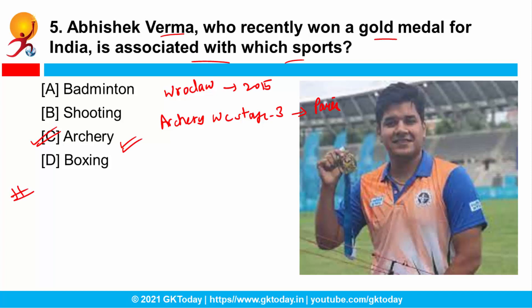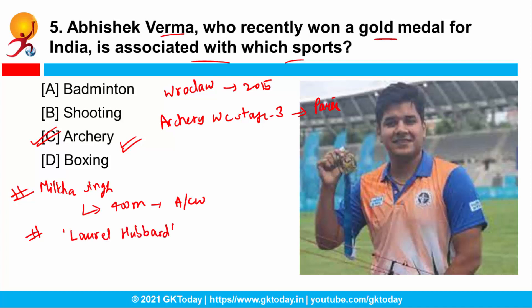Apart from it, veteran athlete Milkha Singh has passed away due to COVID-19. He is the only athlete to have won gold in the 400 meters race at both the Asian Games and the Commonwealth Games. Also, Laurel Hubbard is the first ever transgender athlete to compete at the Olympics. Since she does not qualify the criteria needed to compete in the men's category, she will be competing in the women's category and belongs to New Zealand.